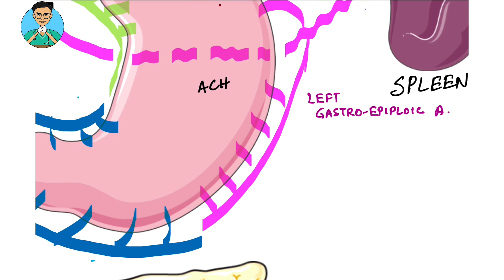How to remember the name? As it is on the left hand side of the stomach, it is the left artery. As it moves along the greater curvature of the stomach, it has the name gastro. And it moves very closely to the transverse colon, which contains epiploic appendages — hence you can remember the name left gastroepiploic artery.